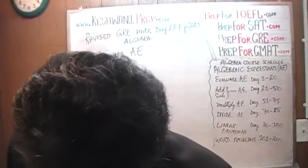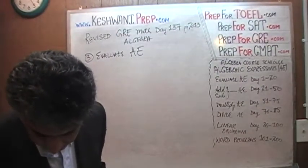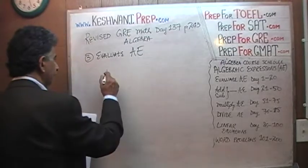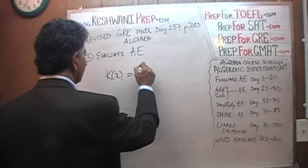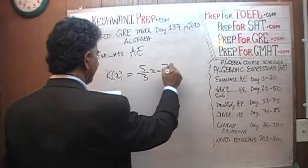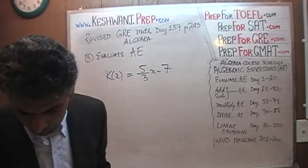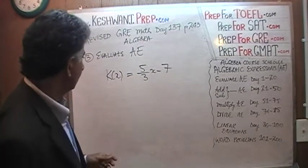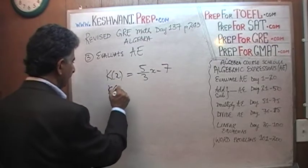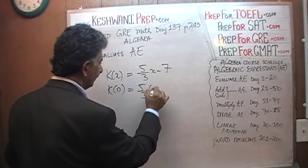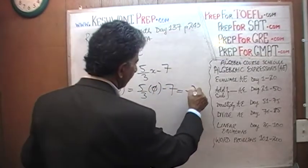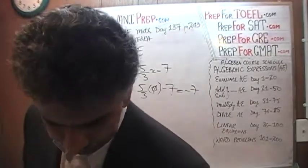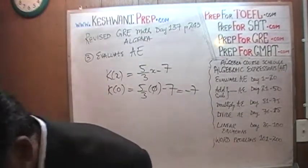Part C: what's the value of the function they're calling k? k(x) equals 5 thirds x minus 7, and we have to evaluate this expression when x equals 0. We replace x with 0: 5 thirds times 0 is 0, since 0 times any number is 0. So we're left with just negative 7. The answer is negative 7. That was the end of that problem.